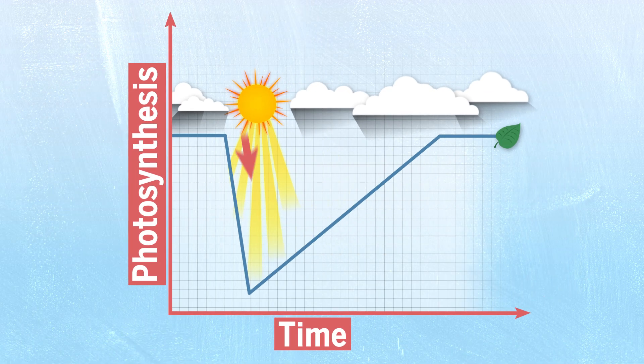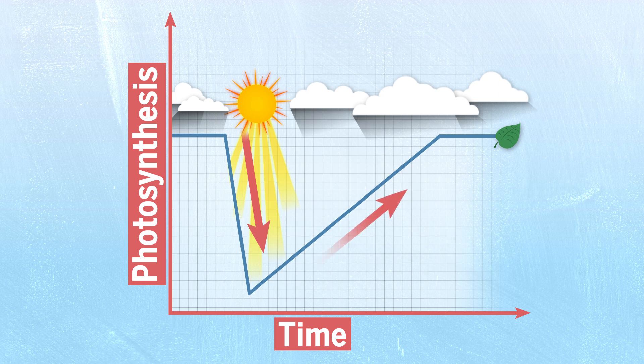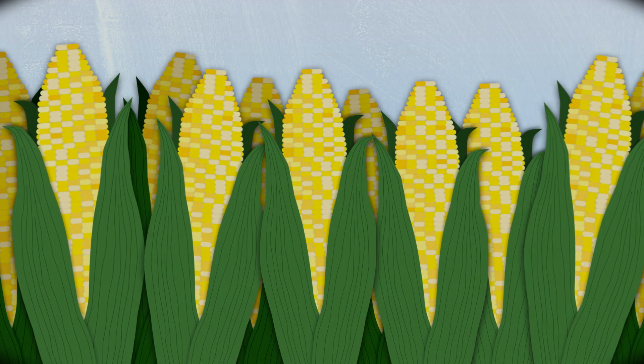The drop-off is abrupt. The plants need to protect themselves, but getting back up to speed is slow, like the way your eyes slowly adjust after entering a dark room.